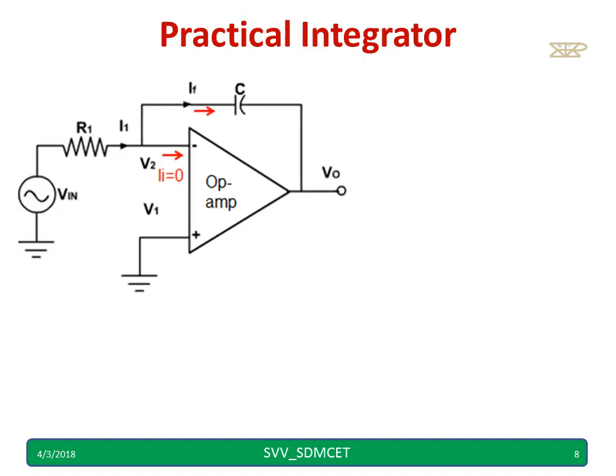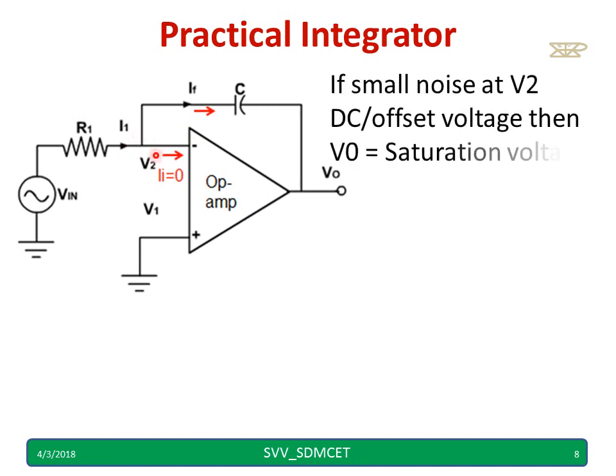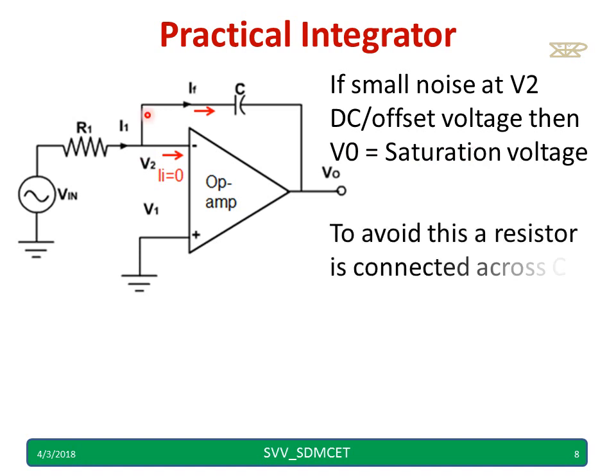Consider practical integrator. Now let us consider this circuit diagram we are using. If a small voltage is there at the V2 or inverting terminal, a DC voltage, this blocks DC and gain becomes infinity. Hence the output V0 goes to saturation. To avoid this situation a resistor will be connected across the capacitor.